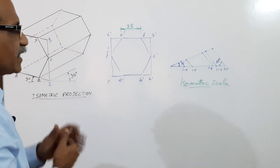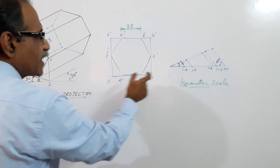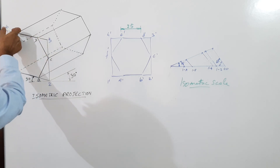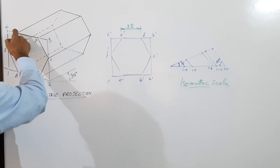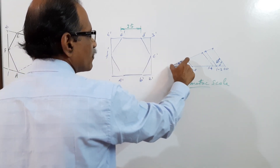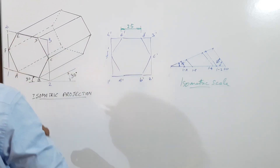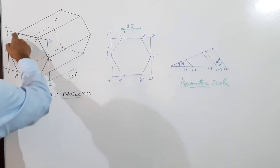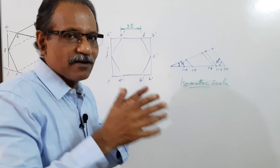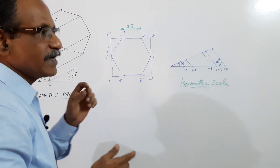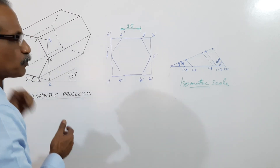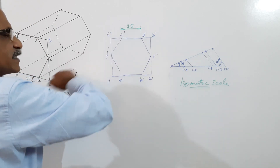Take the ISO length of 1a and mark from 2 backwards, 1 forward, 3 backwards, 4 forward to get points a, b, d, e. Take the distance of 1b and 1f; mark f and c. So you have got a, b, c, d, e, f — connect them to get the isometric projection of the front hexagonal face. Then through all six points, draw lines parallel to the third 30-degree axis.